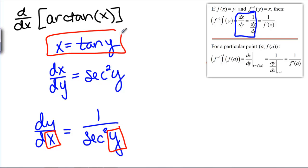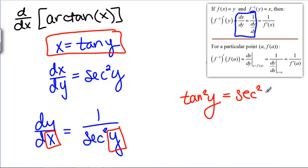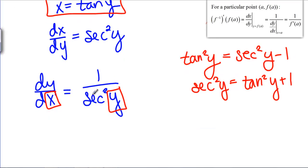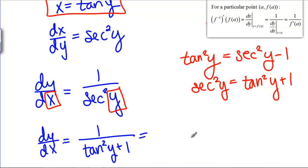We know that X is equal to tangent of Y, and we're going to use the fact that tangent squared of Y equals secant squared of Y minus 1. That means secant squared of Y equals tangent squared of Y plus 1. We can replace the secant squared of Y in the denominator with tangent squared plus 1. Since X equals tangent of Y, we get 1 over X squared plus 1 — that's the derivative of arctangent.